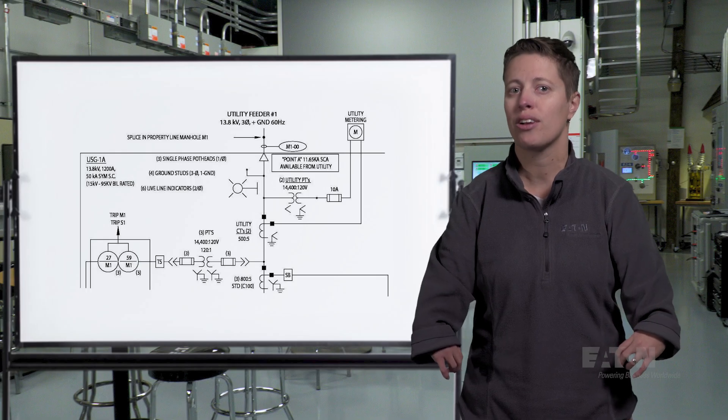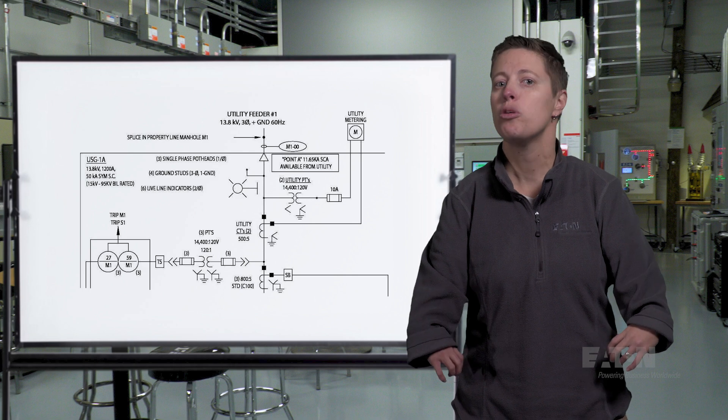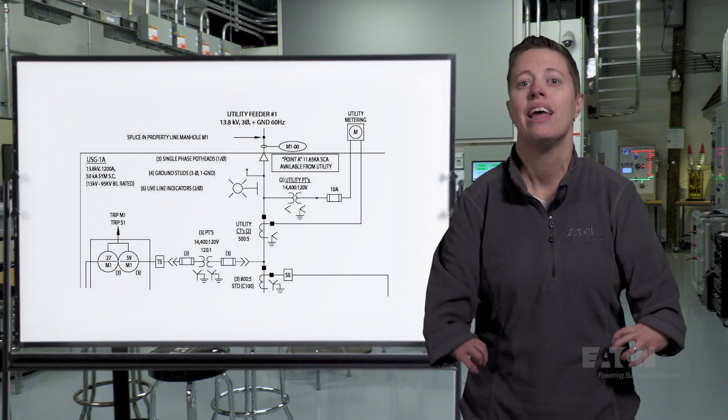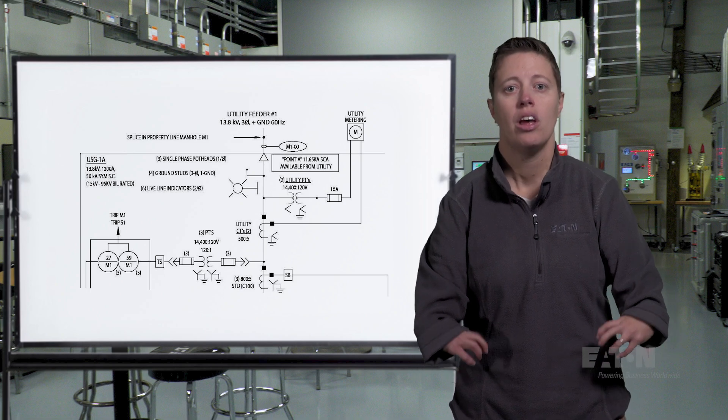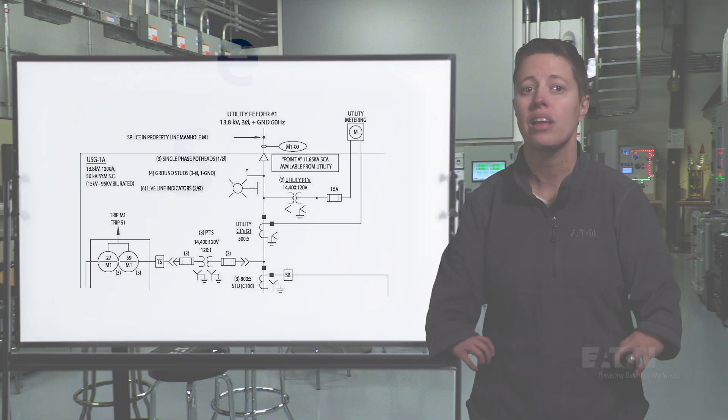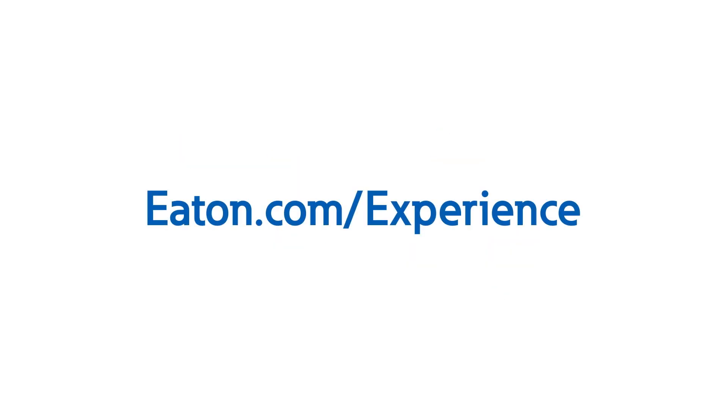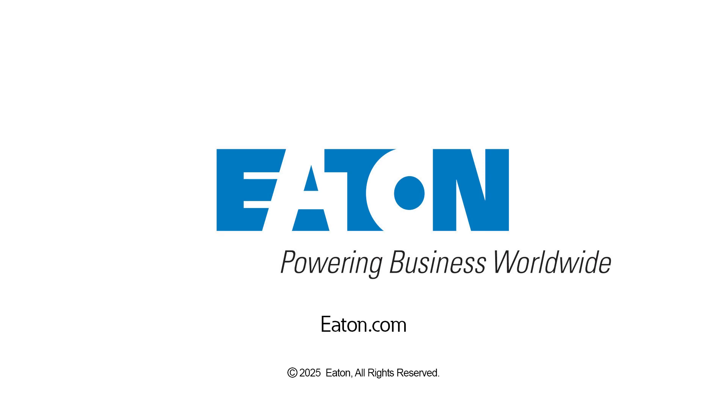Your first look at a single line diagram may be overwhelming. But once you break it down into the individual components, as we did in this example, it can be easy to understand. To learn more about power systems and see this equipment in action, contact us or your local Eaton representative to schedule a visit to one of Eaton's Power Systems Experience Centers today.